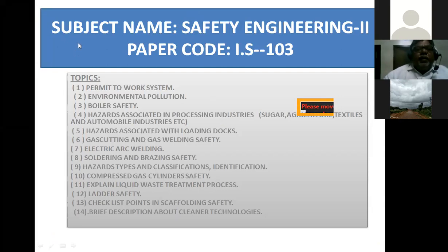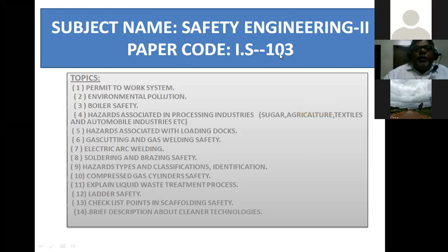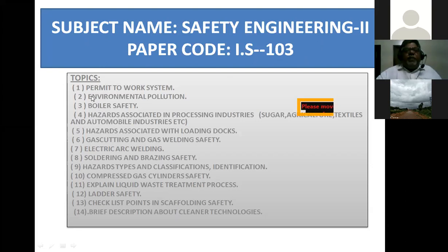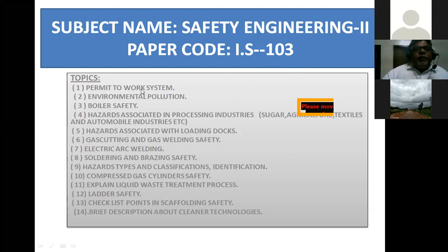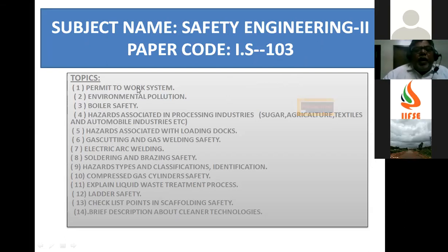The third subject is Safety Engineering 2, paper code IS-103. The first important topic is the permit to work system — covering types of permits, and the duties and responsibilities of the permit issuer.